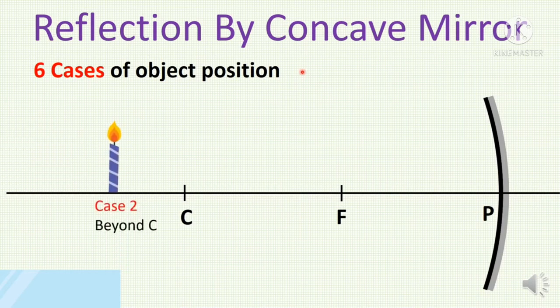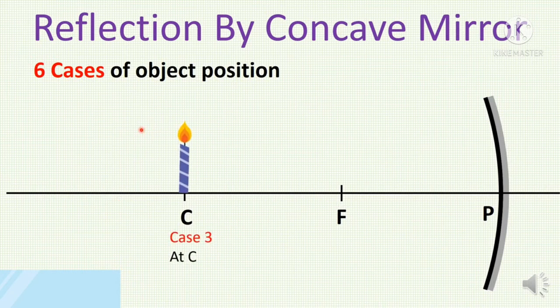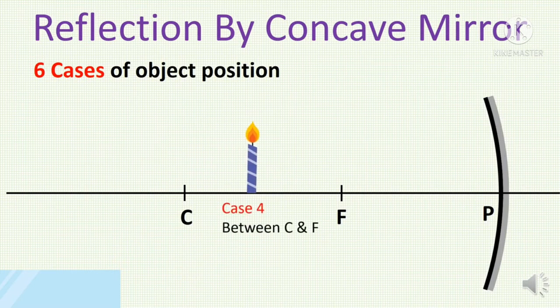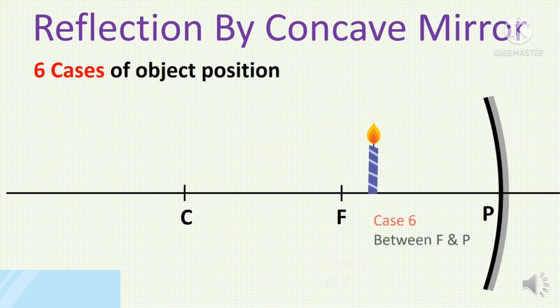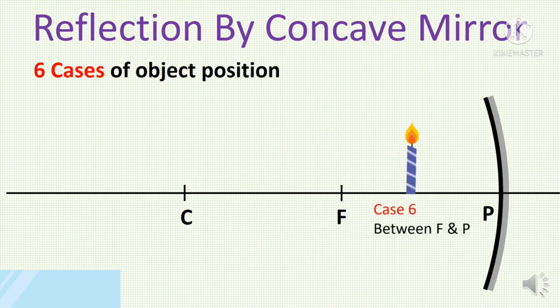Case 1: object is at infinity. Case 2: object is beyond C. Case 3: object lies at the center of curvature. Case 4: object lies between center of curvature and focus. Case 5: object lies at the focus. Case 6: object lies between focus and pole. These are the six cases of object position for a concave mirror.